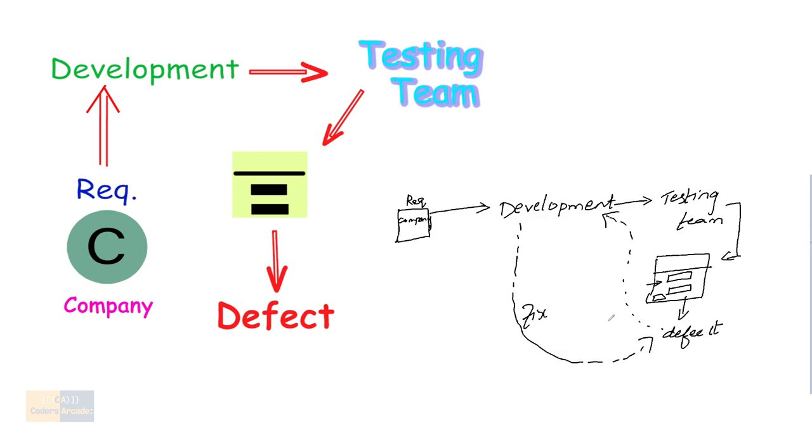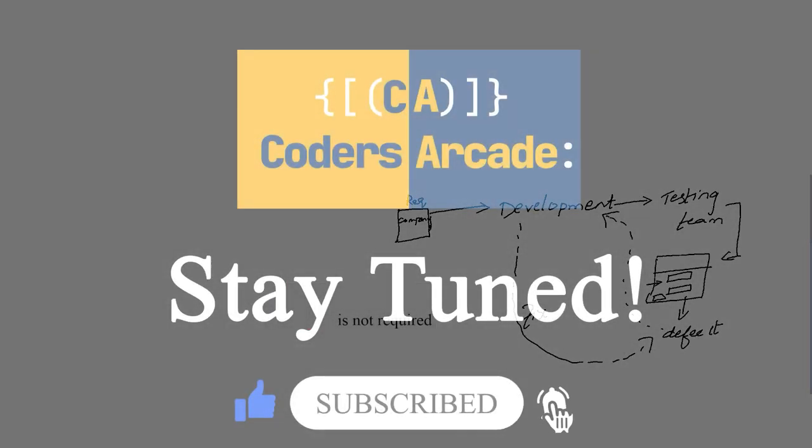So until the software is defect free, until that defect is fixed, we can never give that software to the customer. This is a little bit of overview of manual testing and how the workflow goes. In the next coming videos, you will understand how the process goes in detail. Don't worry about it. And please follow up the next videos to get more clarity on what is manual testing. Thank you guys.